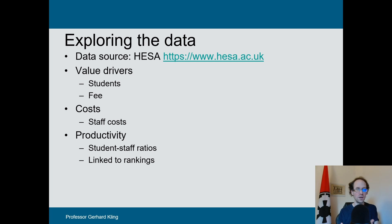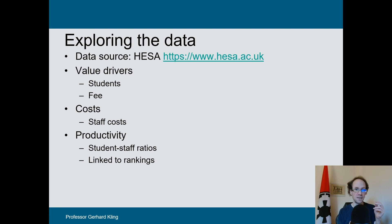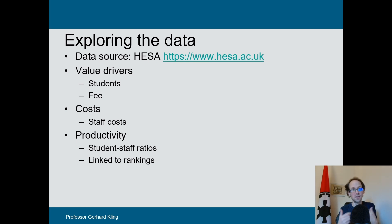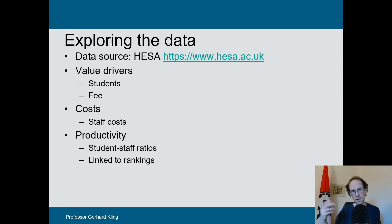The normal assumption would be that if you can achieve more outputs with less input, it indicates higher productivity. However, in the case of universities, student-staff ratios are mainly used as an indicator of quality. The idea is to have a low number of students per academic. This of course limits the scope to enhance productivity. But these student-staff ratios are linked to university rankings, which then affect student recruitment, so you have to try to keep your student-staff ratio low.